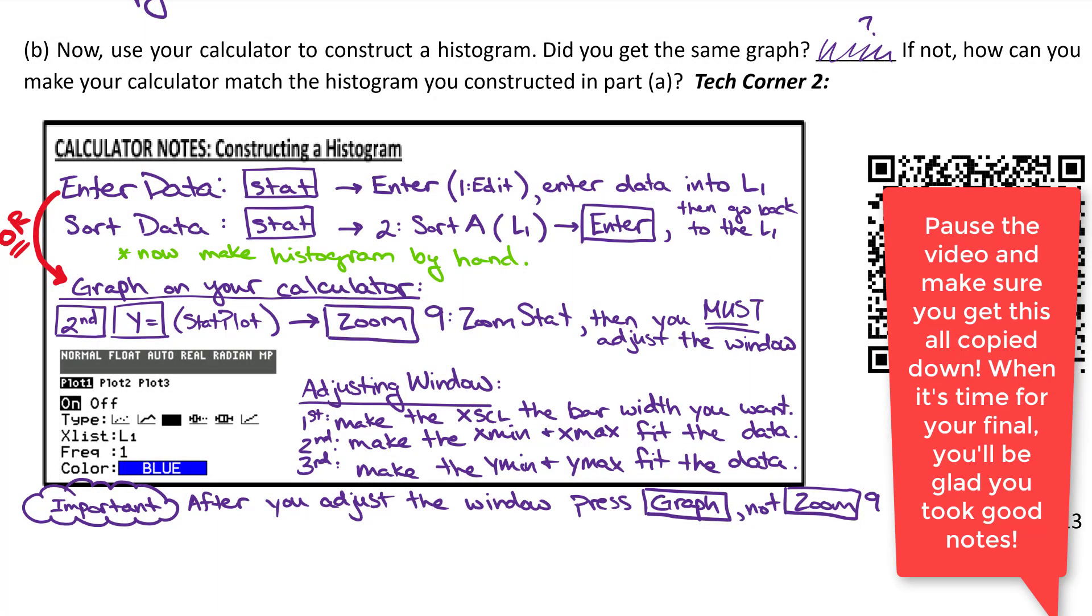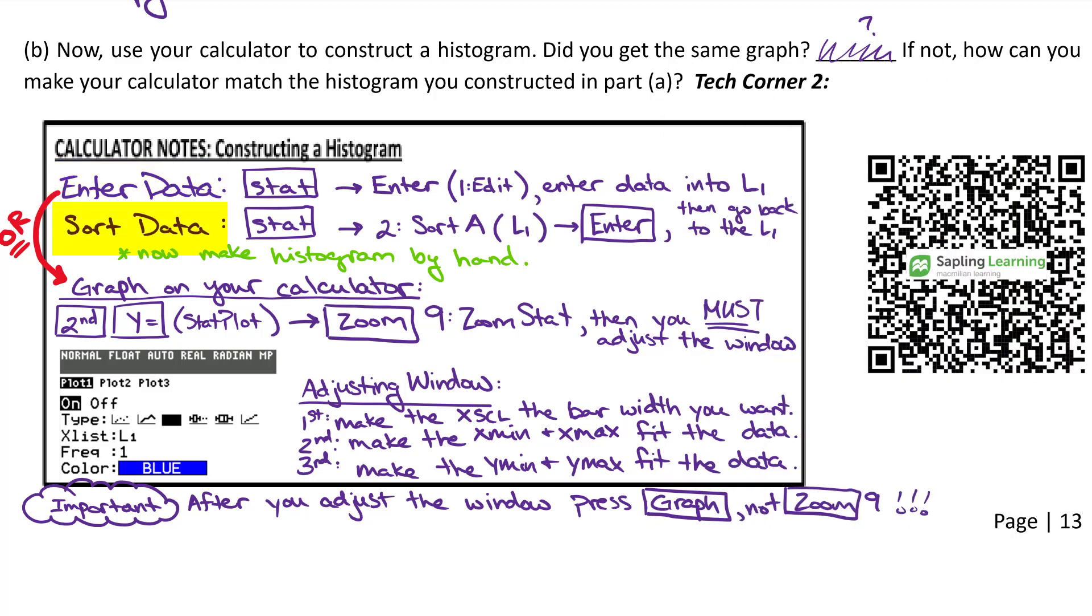So down here in this little box for calculator notes, I've summarized some of the main ideas we've learned so far with our calculator. Entering data, sorting data, and then how to make the histogram graph on your calculator. I also commented at the bottom how to help you with the adjusting the window step. Just remember, after you adjust your window, press graph, not zoom 9. That'll save a lot of frustration. And then off to the side, there's another QR code. This QR code is for a tech corner. You can see it's up here. So this is for tech corner number two. This is going to be another example going through how to construct a histogram with your calculator. So if you ever just need a quick refresher and you don't want to go back, which video was that? And have to scroll through. This is a short couple minute video that'll just focus on constructing a histogram.